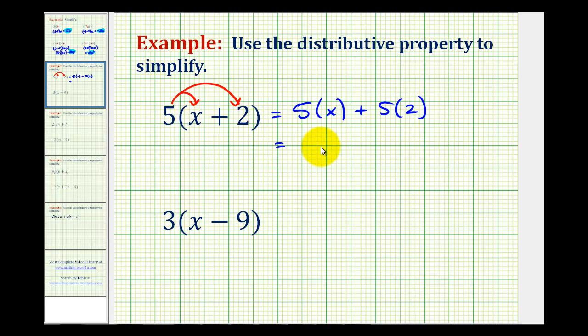Well, five times x would be five x, and five times two is equal to ten, so we have five x plus ten.